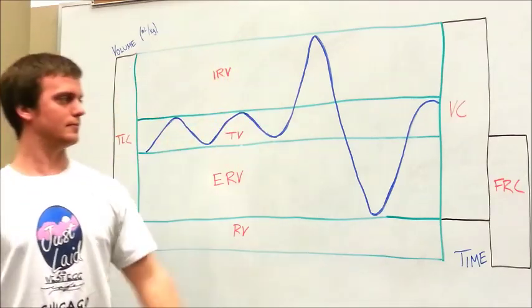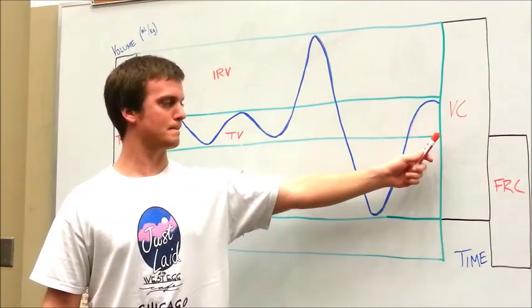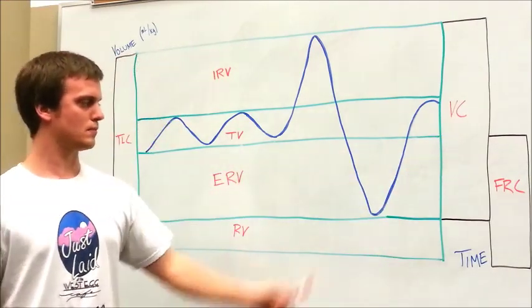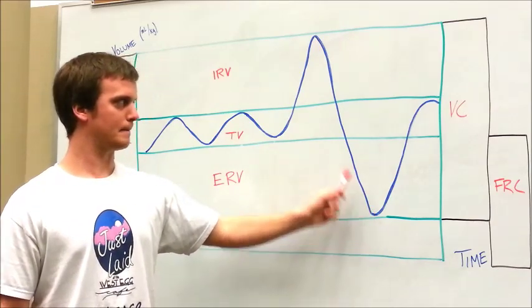You can see that the vital capacity is a mixture of when he blew out as much air as he could to the point where he brought in as much air as he could.